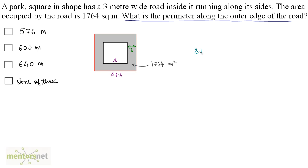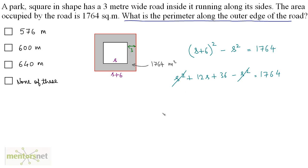So I have (S + 6)² minus S² equals 1764. Let us solve this: S² + 12S + 36 − S² = 1764. The S² terms cancel out, leaving 12S = 1764 − 36, so 12S = 1728, and therefore S = 1728 ÷ 12 = 144.